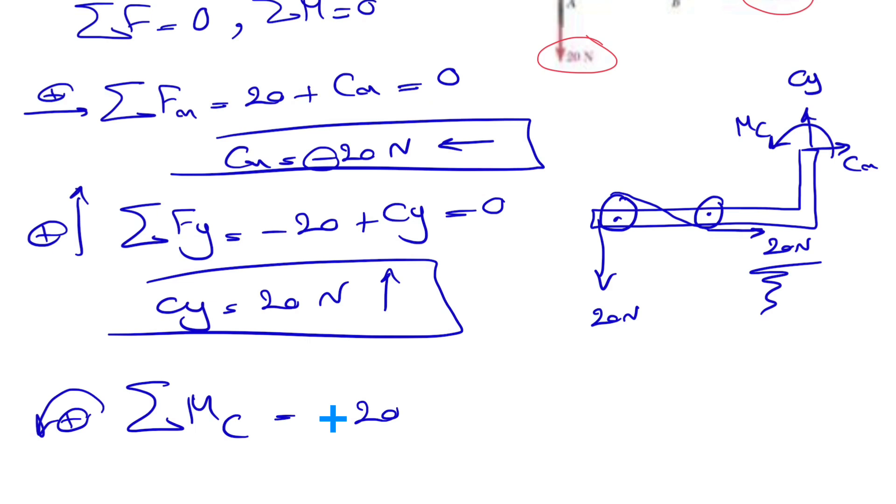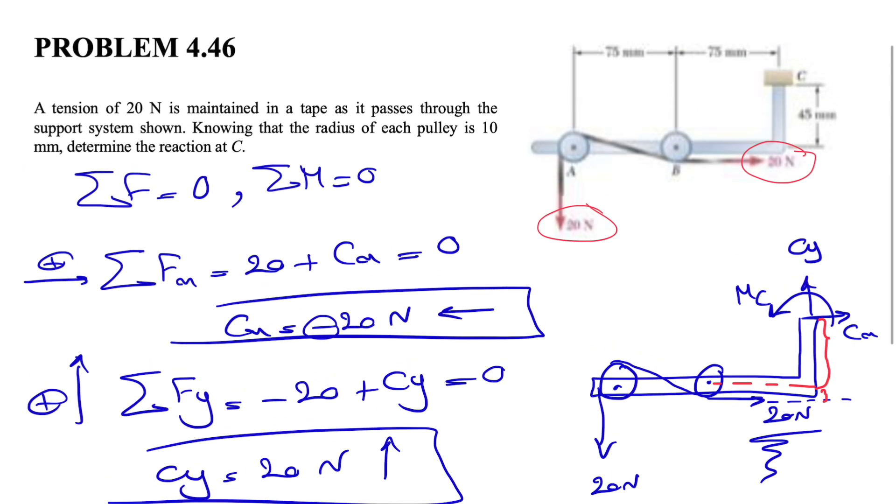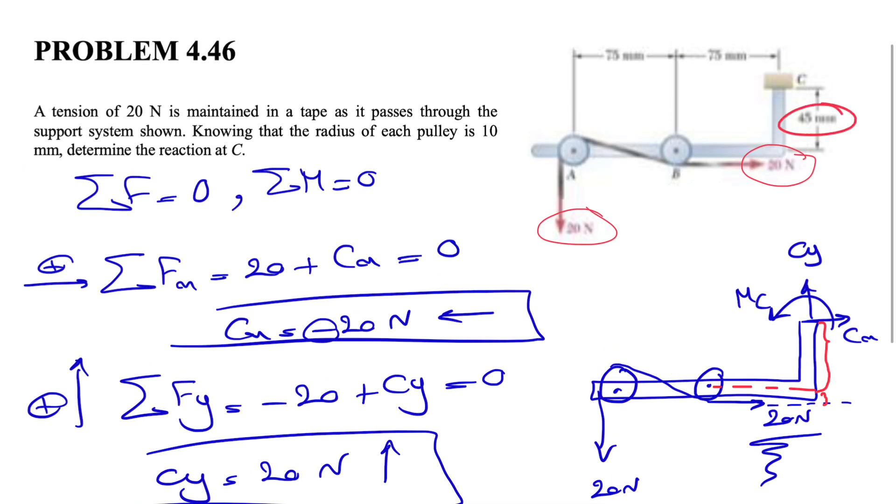The distance that we are looking for, so this will be the line of action. If we want to find the distance, what we are looking for is this distance here plus the radius of the pulley. We know that this distance in here from the figure is 45 millimeters. So this will be 45 millimeters.